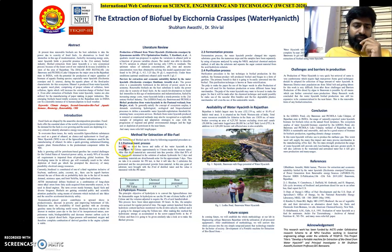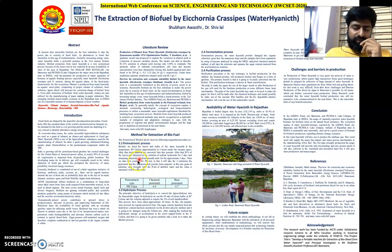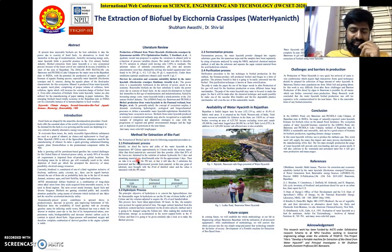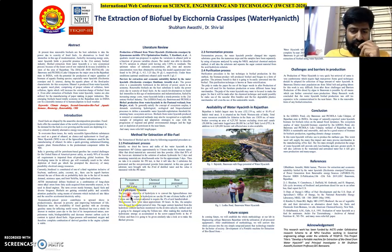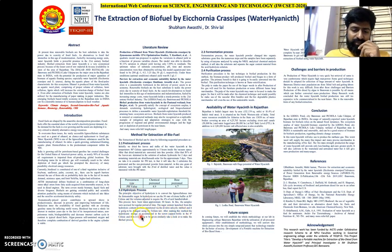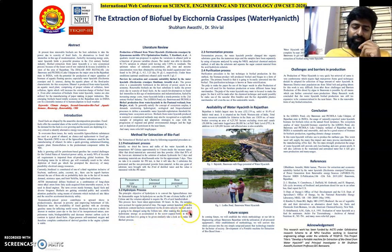First of all, we have to do the pretreatment process. The pretreatment process will convert your crop into ester form — that is, esterification. Next is hydrolysis. After the esterification, hydrolysis is performed and the product is accumulated in screw cap bottles. This is the biofuel extraction process.